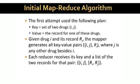Formally, the input to the reducer is the key i, j, and the list of the two values associated with this key, the records i and j.